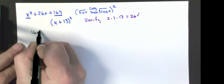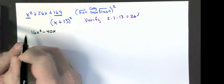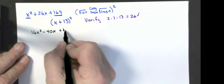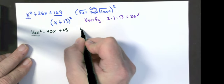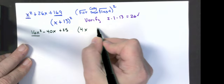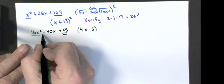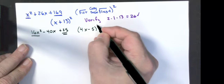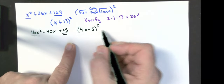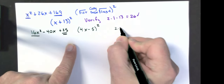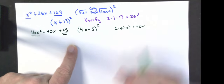Next example: 16x² minus 40x plus 25. Take the square root of the first, the square root of the last, copy the sign, all squared — giving (4x minus 5)². Now verify: 2 times 4 times negative 5 equals negative 40, and it works. Please don't forget that verification step.